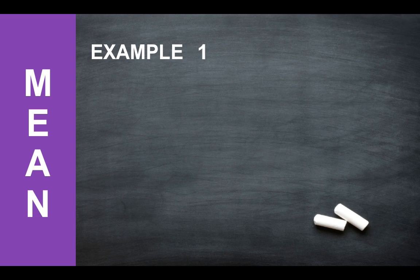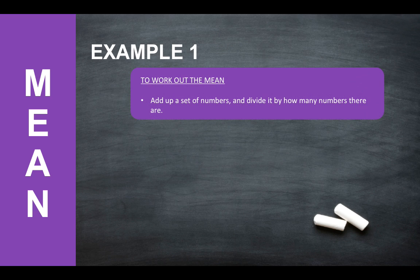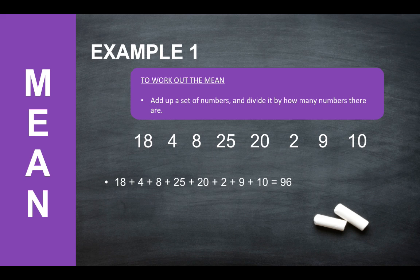Okay so let's work out the mean. So how do you work out the mean of a set of data? Basically all you need to do is add up a set of numbers and then divide it by how many numbers there are. So for example we have the numbers 18, 4, 8, 25, 20, 2, 9 and 10. And to work out the mean, you add up all of these numbers, which will give you 96, and then divide it by how many numbers there are. So we've got 1, 2, 3, 4, 5, 6, 7, 8 numbers. So 96 divided by 8 to give you that answer of 12.